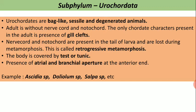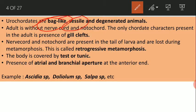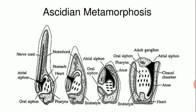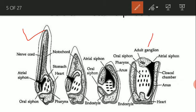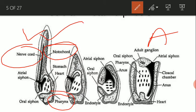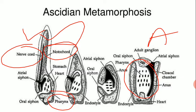Now, Urochordata. Urochordates are bag-like, sessile and degenerated animals, and they possess retrogressive metamorphosis. In the larval form they have notochord, nerve cord, pharyngeal gill slits, and a post-anal tail. But in the adult form they have only the pharyngeal gill slits. All other features — notochord, nerve cord and post-anal tail — are degenerated. This type of metamorphosis, where the larval form is more advanced than the adult form, is known as retrogressive metamorphosis.